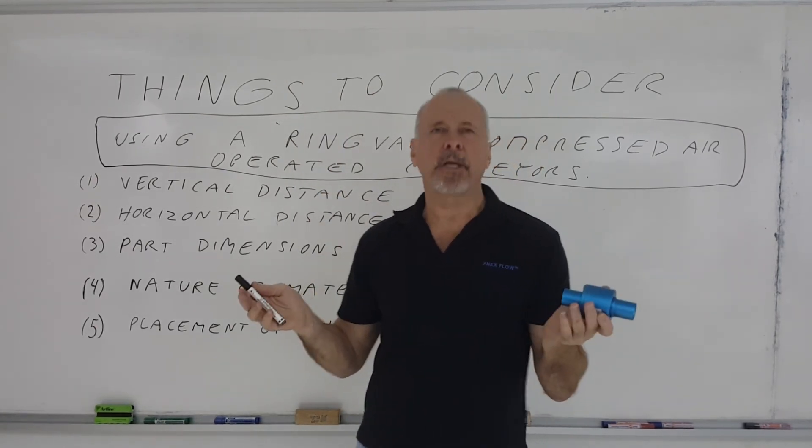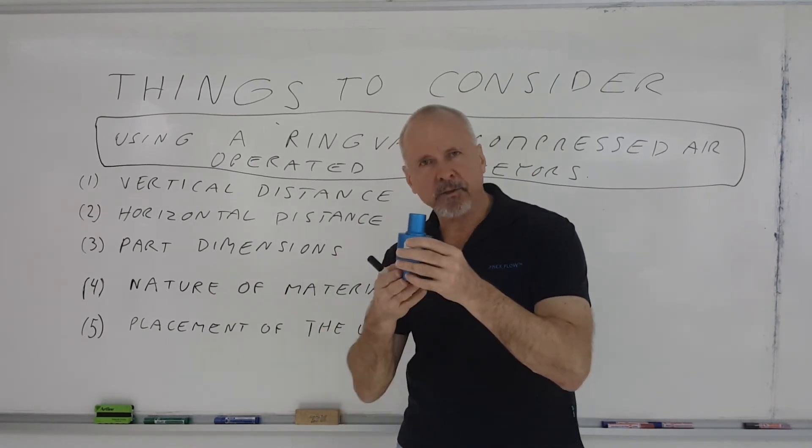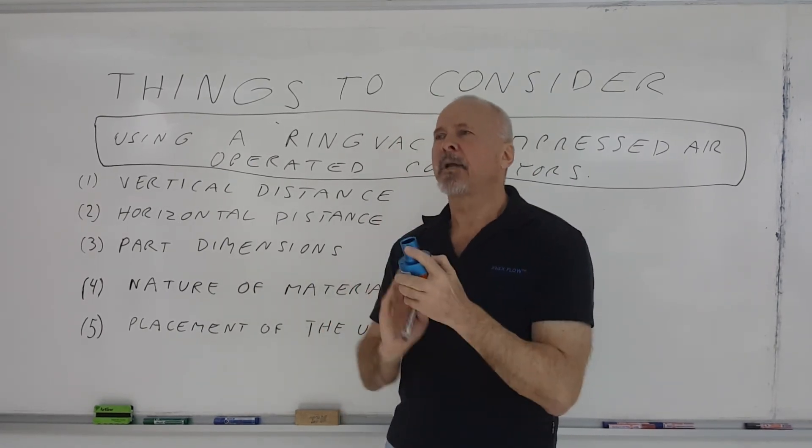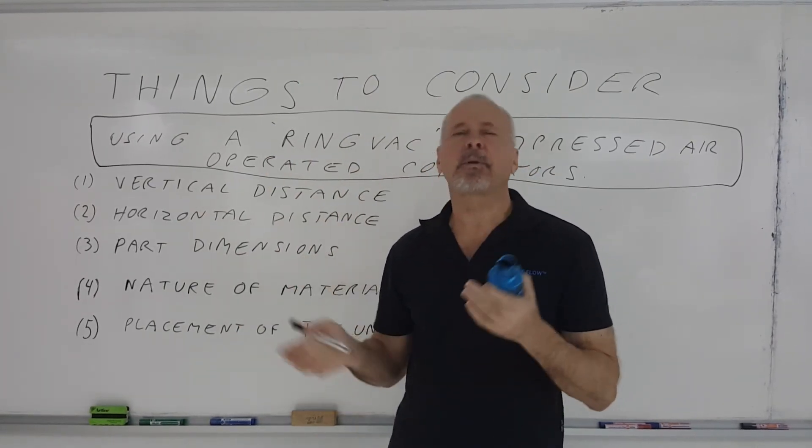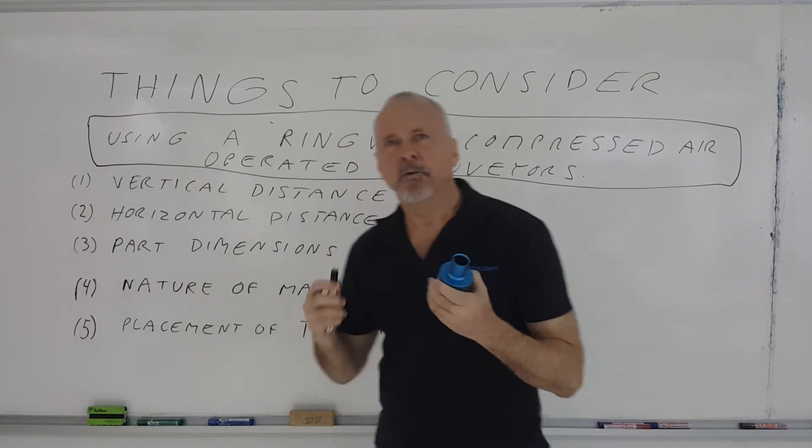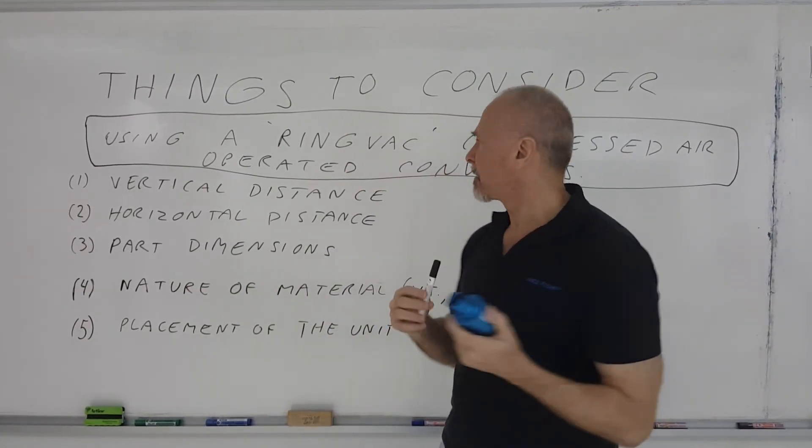So let's say you're conveying nine meters. You want it to have three meters on the inlet drawing material in, and then you want to have six meters downstream where you're taking it to. That's the ideal placement for making the RingVac air-operated conveyor work the most effectively.